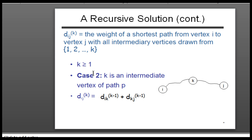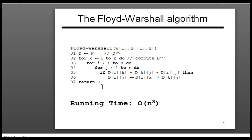We'll understand this better when we look at the algorithm and the simulation. The running time for Floyd-Warshall is O(n³) because there are three nested loops: k, i, and j. Unlike Bellman-Ford where we try to find the maximum, here we're trying to find the minimum — we minimize the value of the path between vertices.